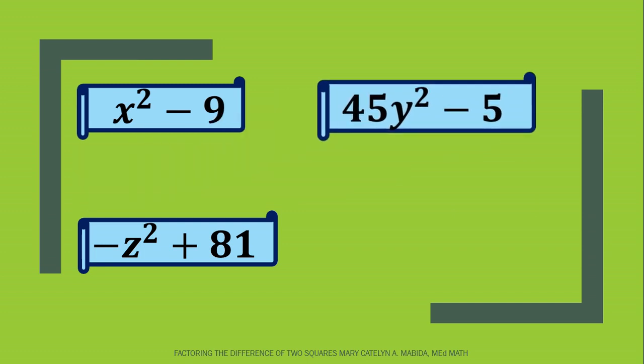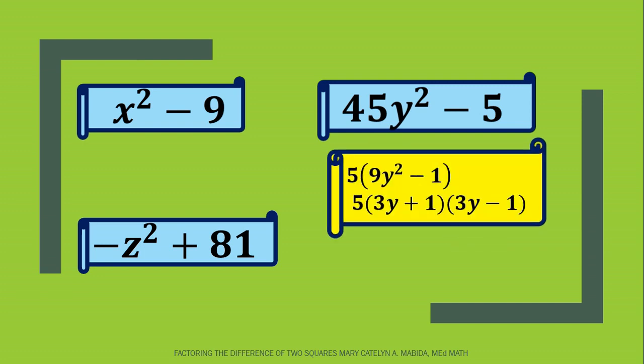Number 2: 45 y squared minus 5. Again, you can pause the video to solve for the answer. Now sometimes it is necessary to remove the GCF before you can factor it out completely. The GCF here in our example is 5. We can factor out our binomial and we have the product of 5 and the quantity of 9y squared minus 1. Then, the final factored form is 5 times the product of the sum and difference of 3y and 1. Good job!